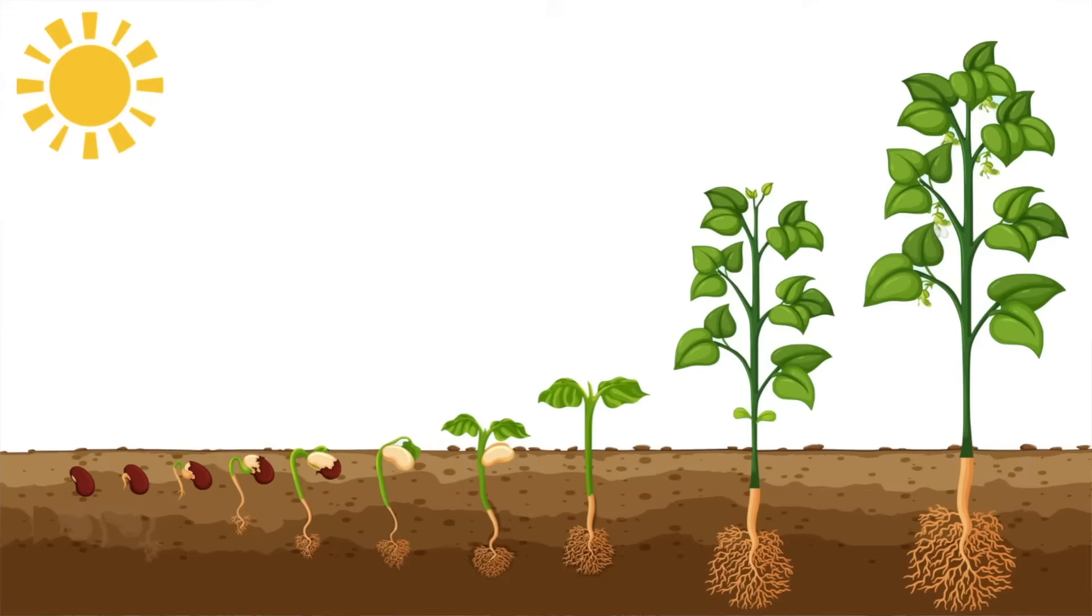After this, the seed ruptures and begins to grow roots and shoots. The root grows into the soil to search for more water and nutrients. The root also helps to keep the seed anchored in place.